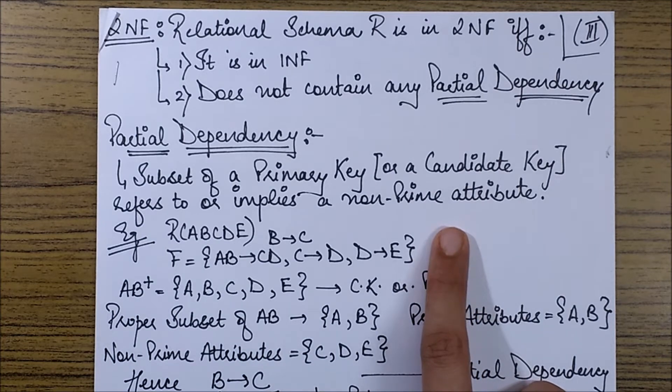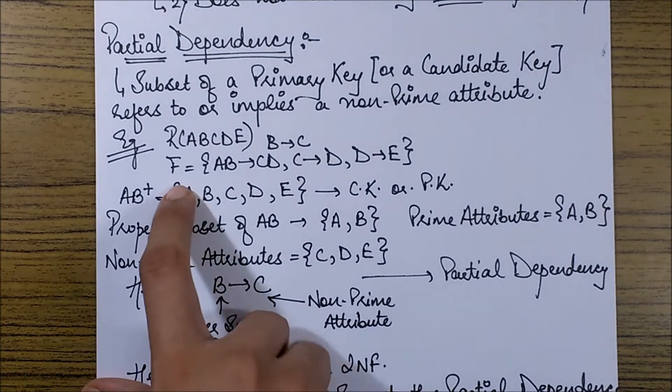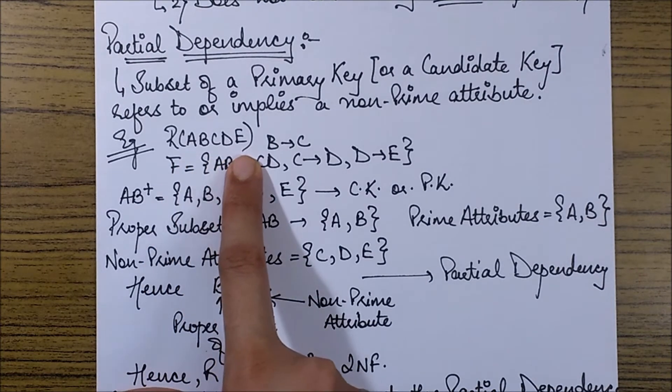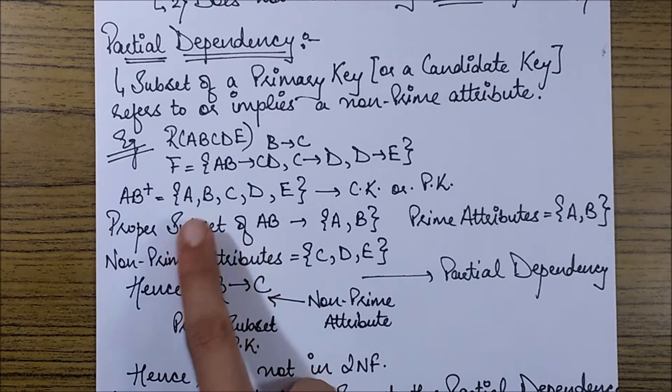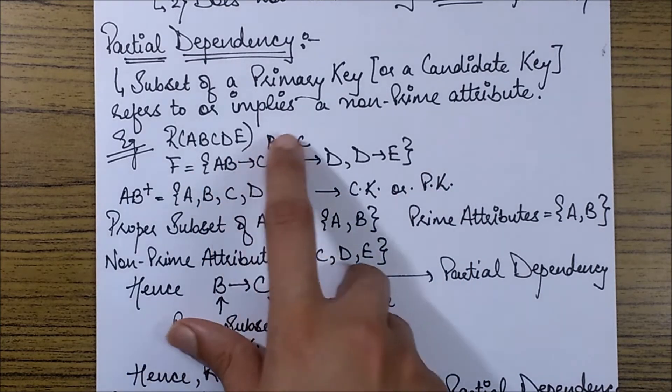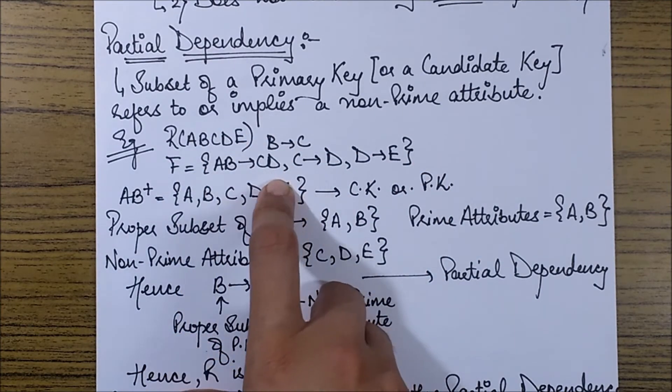Now let's see this with the help of an example. The example over here is of a relational schema containing 5 attributes A, B, C, D, E. And we have its functional dependency set stated over here which has 1, 2, 3, 4 dependencies. Actually this is a combination of 2 dependencies so you can also say it contains 5 dependencies.